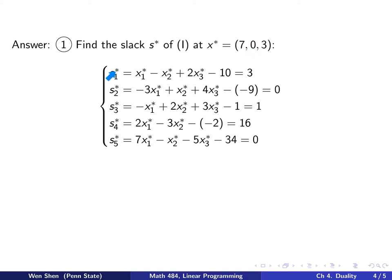The slack is a vector with a component for each constraint. For the first constraint, I take the left-hand side minus the constant — since we have a greater-than-or-equal sign, this gives something non-negative. Plugging in x1*=7, x2*=0, x3*=3, I get 3. Going through all five constraints, the slack vector is: S1=3, S2=0, S3=1, S4=16, S5=0. In particular, S1, S3, and S4 are non-zero.